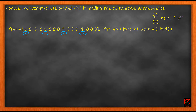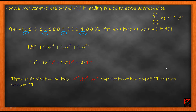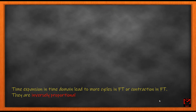Let's go through another example where I further expand the signal with three zeros. Now the indexing becomes 0, 4, 8, 12, and the Fourier transform is again written using indices 0, 4, 8, 12, then converted with 0, 2, 4, 6. I get new factors contributing to the contraction or more cycles in the FT. I can write W², W⁴, W⁶ as two W¹s, two W²s, and two W³s — why this is done becomes clearer in the next slide.